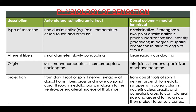Regarding projection: in the anterolateral spinothalamic tract, fibers travel from the dorsal root of the spinal nerves, synapse at the dorsal horns, cross and move up the spinal cord through the medulla, pons and midbrain to the ventroposterolateral nucleus of the thalamus. In the dorsal column, fibers ascend from the dorsal roots to the medulla, synapse with the dorsal column nuclei — nucleus gracilis and cuneatus — cross to the contralateral side, ascend to the thalamus and then project to the sensory cortex.